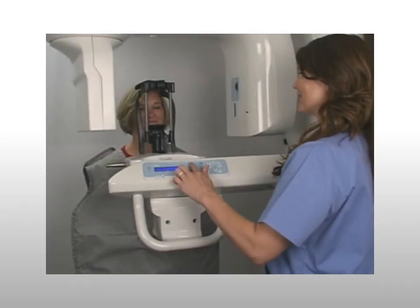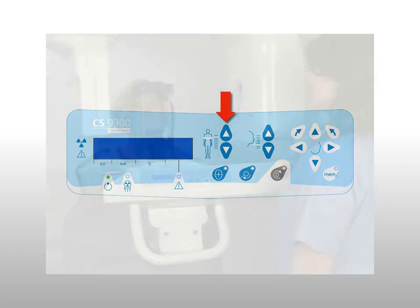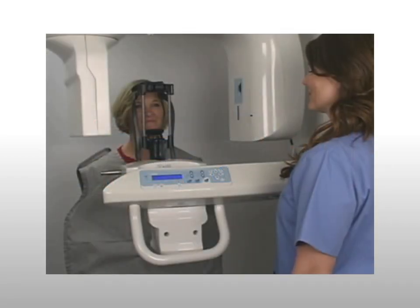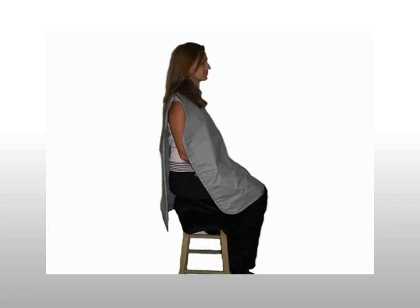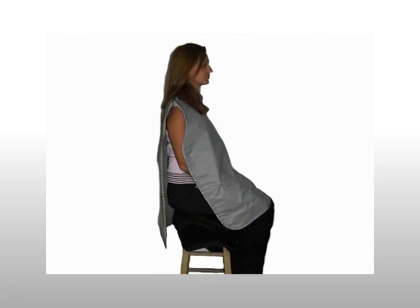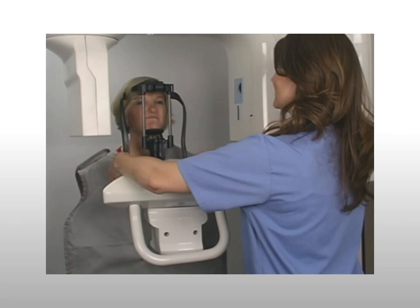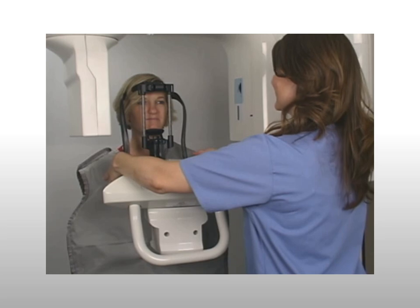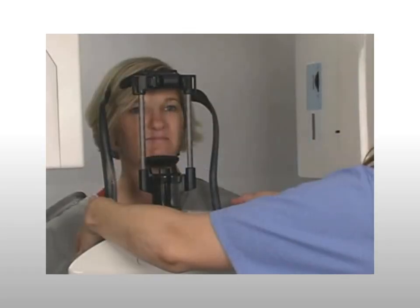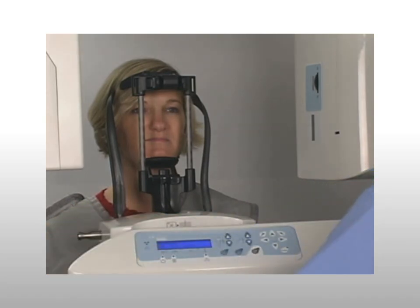To adjust the machine to the patient's height, use the height adjustment button to move the machine up or down to enable the patient to comfortably place the chin and forehead into the head support. If the patient is tall, have the patient sit on a stool and adjust the machine accordingly. After the machine is at the correct height, open the temple supports and instruct the patient to step forward and place chin and forehead into the head support.